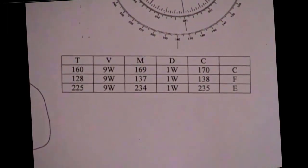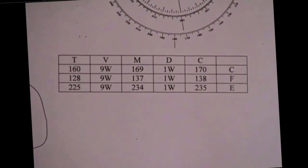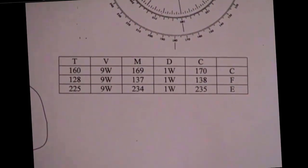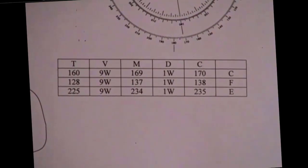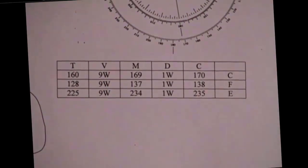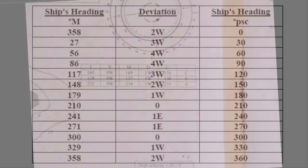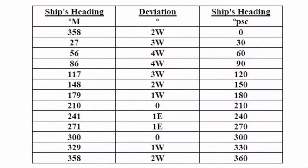We're on a heading of 170, so we have to look up compass deviation, compass error, in this table for 170. For 170, which falls here between 150 and 180, 170 is closer to 180 than it is to 150. So I'm going to use one degree west as my deviation.